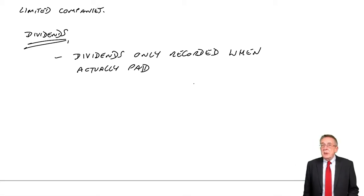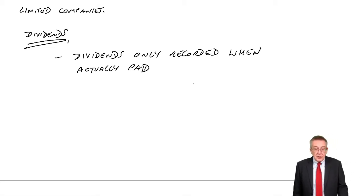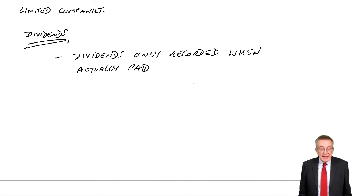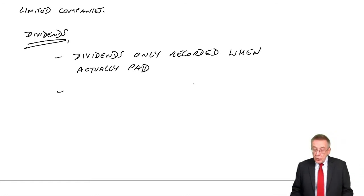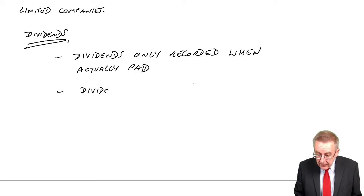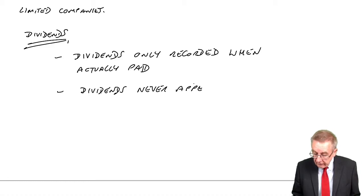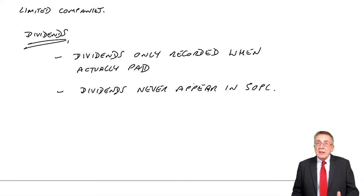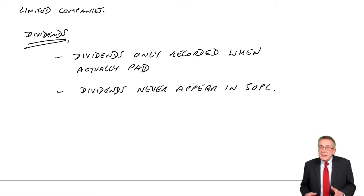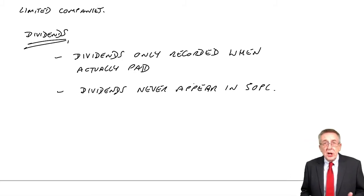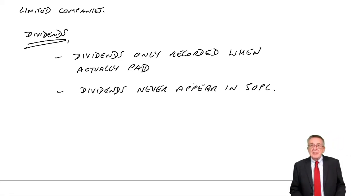It's only subtracted from retained earnings — we only pay out the cash in the year the dividend is actually paid. Also, just like drawings, dividends never appear in the statement of profit or loss. The only place dividends will appear is when we're calculating the retained earnings: we take the full profits less the full dividends that have been actually paid.